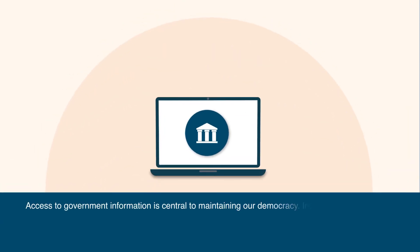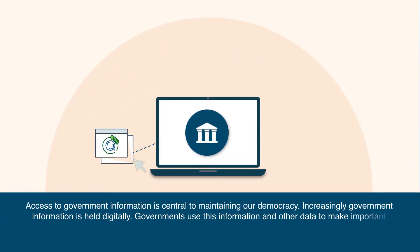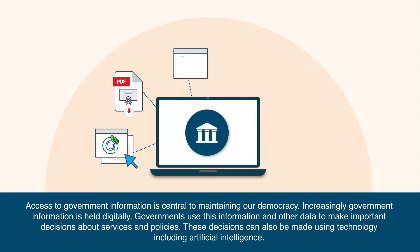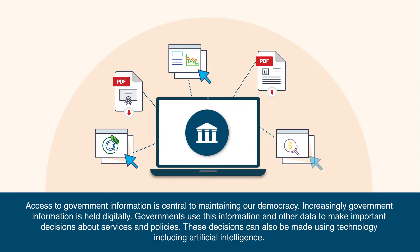Access to government information is central to maintaining our democracy. Increasingly, government information is held digitally. Governments use this information and other data to make important decisions about services and policies. These decisions can also be made using technology, including artificial intelligence.